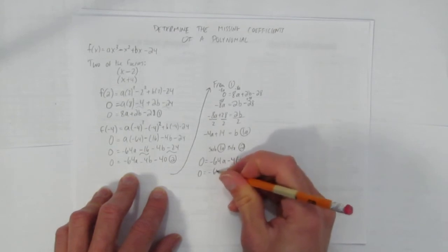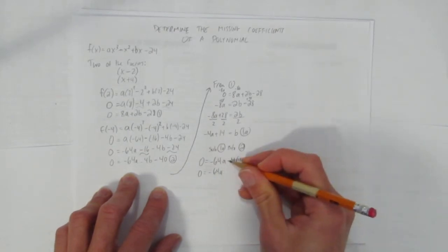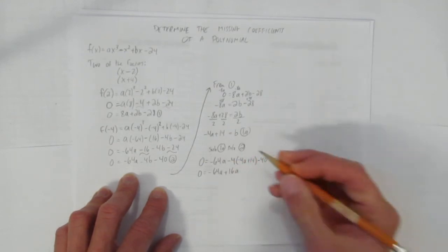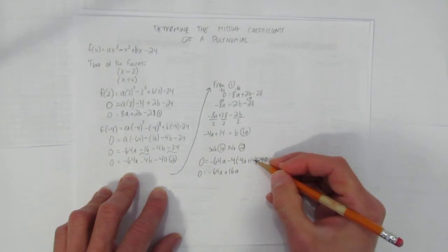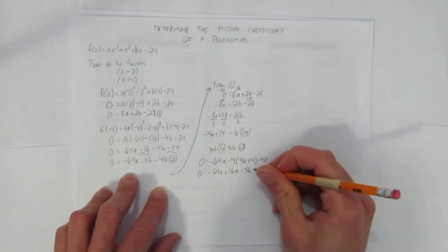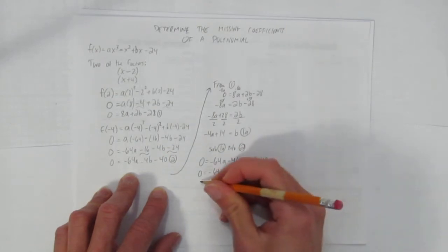So 0 equals negative 64a. Don't forget to rainbow this minus and the 4 in. Minus 4 times minus 4 is plus 16a. Minus 4 times positive 14 is negative 56. You can use a calculator if you want. And then minus 40.